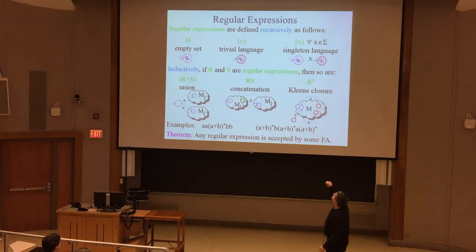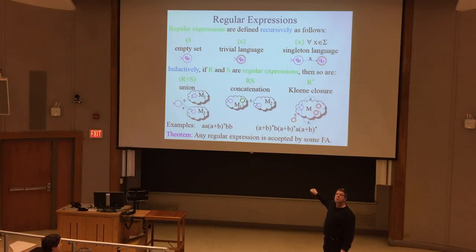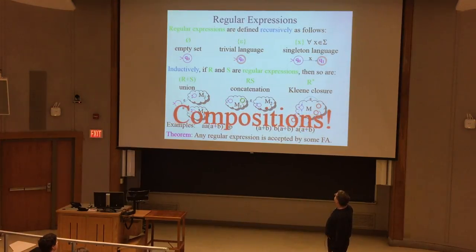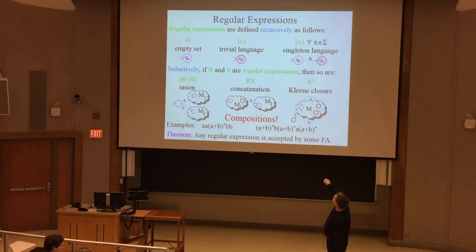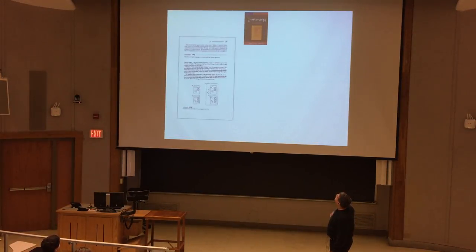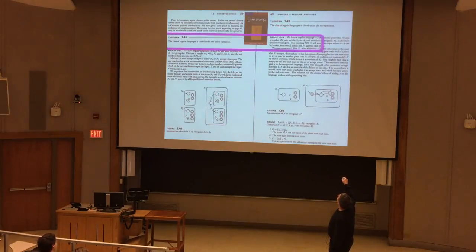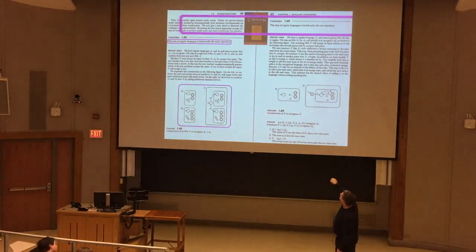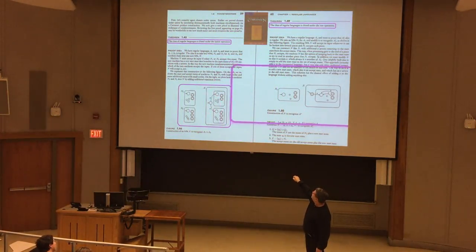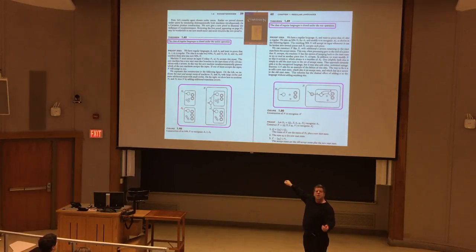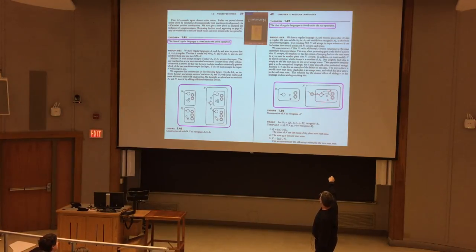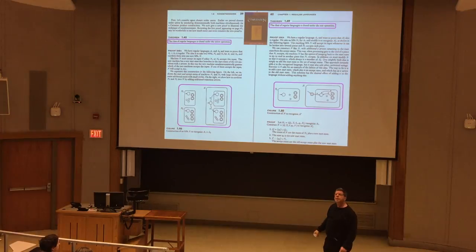So we've shown that for every regular expression you can construct a finite automaton accepting the language it denotes, using these composition rules. This material appears around pages 59-62 in the book, which shows these same construction diagrams for union and Kleene closure. You need to read the book alongside the lectures - spending six to ten hours per week on problems, attending TA sessions, and completing homework is required.